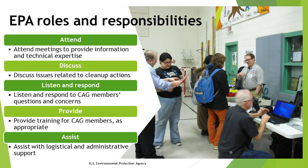EPA will attend CAG meetings, provide site updates and information, and listen and respond to community concerns identified by members related to the Superfund site. The agency may also provide training for the CAG, depending on the group's needs. EPA may provide limited logistical and administrative support and will also continue regular communication practices to keep the community informed about plans and decisions throughout the cleanup process.